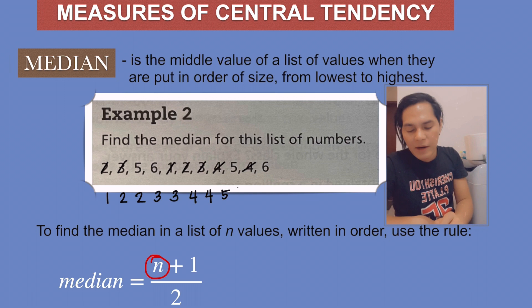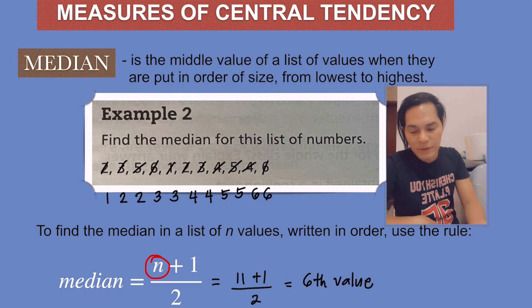And then, there are 11 in all, then plus 1 divided by 2. So the middle value is the sixth value. So let's count: 1, 2, 3, 4, 5, 6. There you go. 4 is the median.